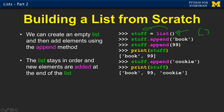So that is a list with nothing in it. The length of that is zero. And then we say, oh, let's append the string book. And then let's append the string 99 and we print it. And now we have a book with two items.